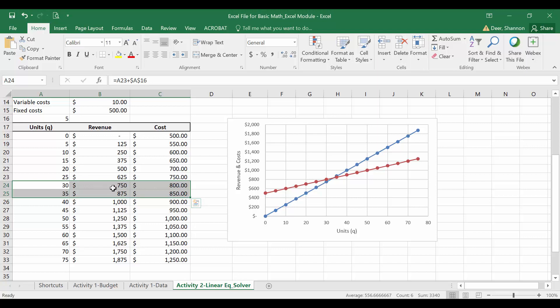I know that because at 30 units, cost still exceeds revenue. And at 35 units, that switches where revenue now exceeds costs. So somewhere in between 30 and 35 units, revenue equals costs or profit, which is just revenue minus costs, equals zero. This was consistent with the manual calculation that we did of breakeven at 33.33 units.